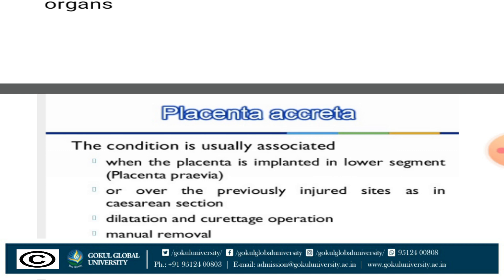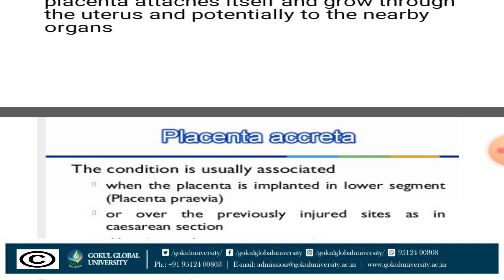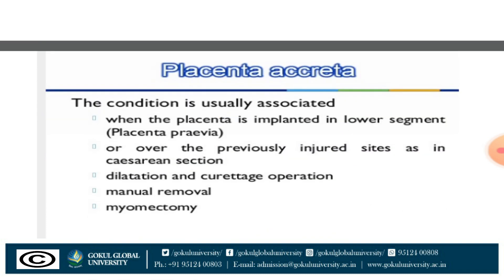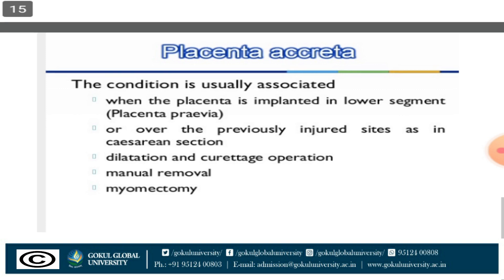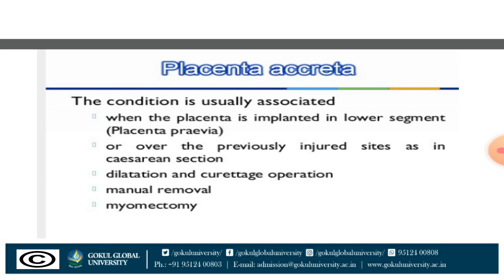Placenta accreta occurs when all or part of the placenta attaches abnormally to the myometrium. Placenta increta is a condition where the placenta attaches more firmly and deeply to the uterus — this condition is more serious than placenta accreta. Placenta percreta is the condition in which the placenta attaches itself and grows through the uterus and potentially into nearby organs. This is the most abnormal condition among these three.